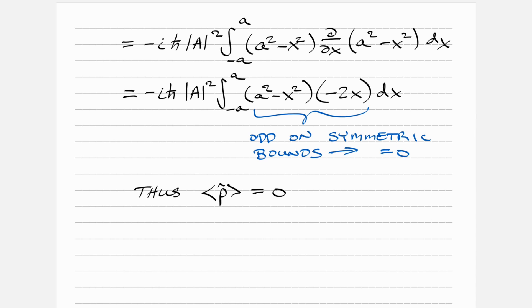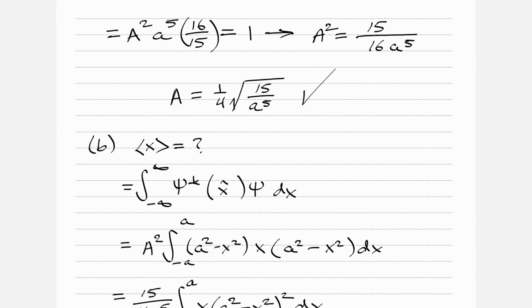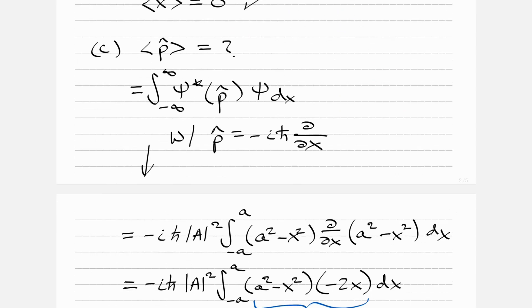The question also asks why we can't simply use m times the time derivative of ⟨x⟩ to get ⟨p⟩. What Griffiths is getting at is that we only know the expectation value of x at time t equals zero. Since everything we've done is at t equals zero, we can't take a time derivative, so we must use the direct operator method.